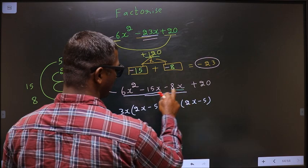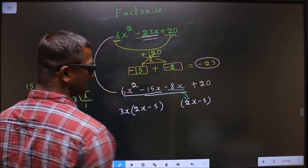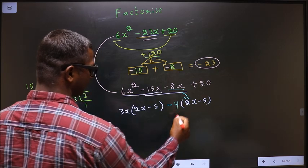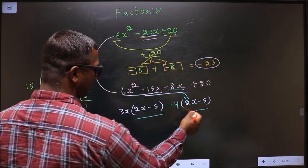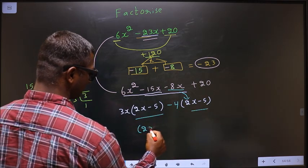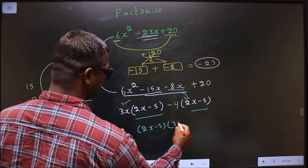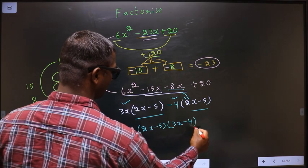Now, from this, 2x has gone inside. So, outside you get minus 4. Now, take 2x minus 5 common. So, here I get 3x and here I get minus 4.